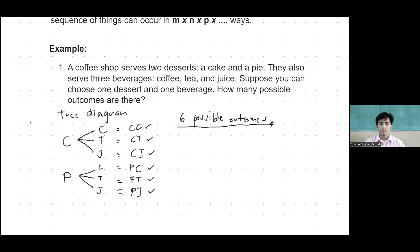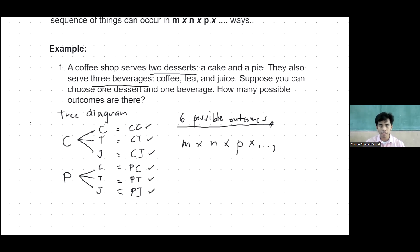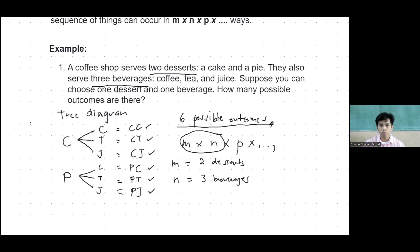Now if you wonder where to use the formula m times n times p and so on, we can use it to identify how many possible outcomes there are. Using the given — two desserts and three beverages — let's say m equals two desserts and n equals three beverages. Using the formula m times n: two times three equals six. So we have six possible outcomes.